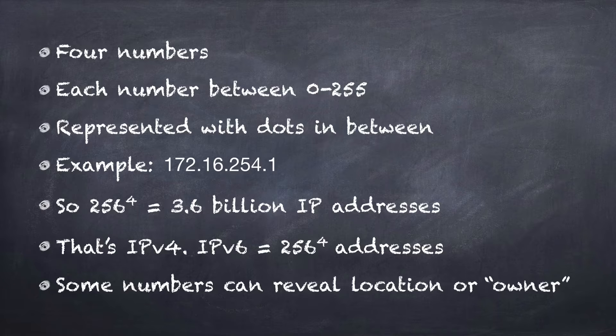So people that all use the same cable company to get their IP address because they're connected through that company may have the first two numbers be exactly the same. Or there might be a variety of groups that are similar that belong to that company. So there is a little bit of logic to it. They're not just randomly assigned numbers. They do make sense.